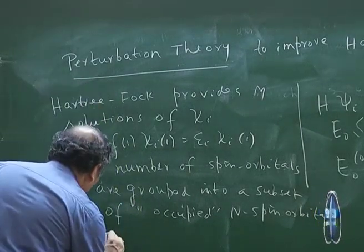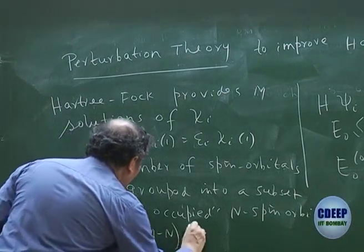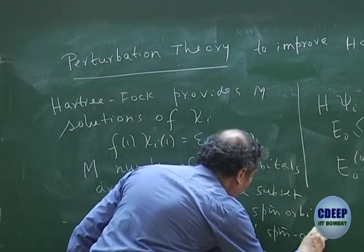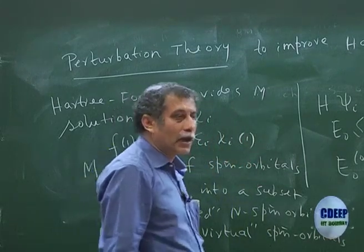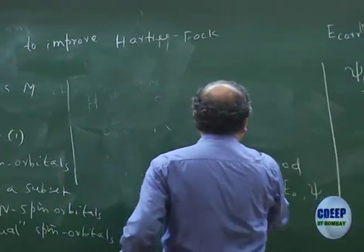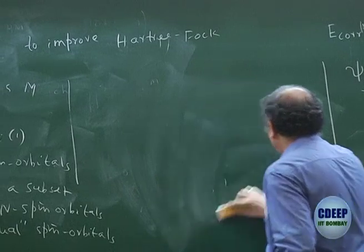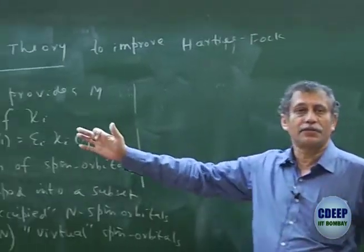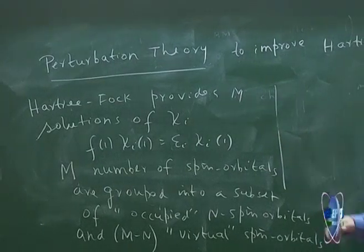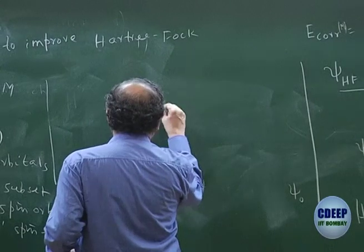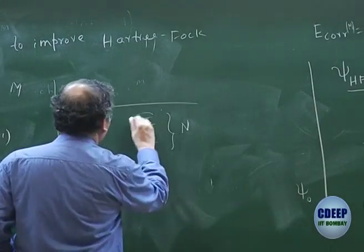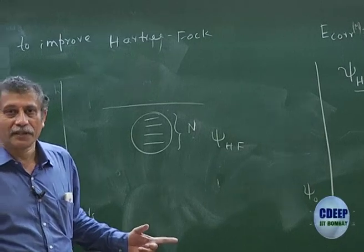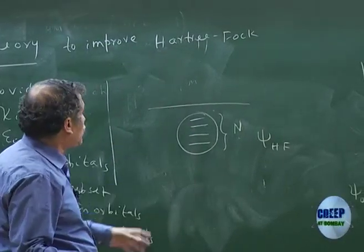The occupied N spin orbitals form a unique determinant for the N-particle problem. Those occupied N spin orbitals, and the rest which I call M−N unoccupied or virtual spin orbitals. The occupied ones by definition are those which constitute the Hartree-Fock determinant. Note that ψ_HF is not an orbital — it is a product of spin orbitals, so together it is ψ_HF.